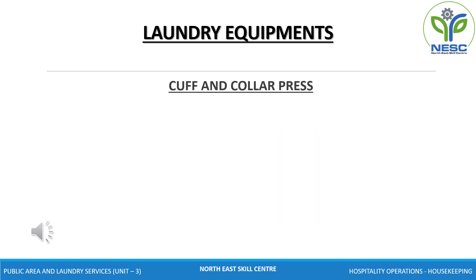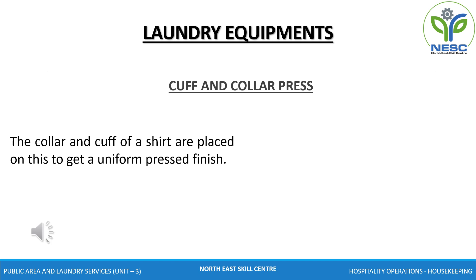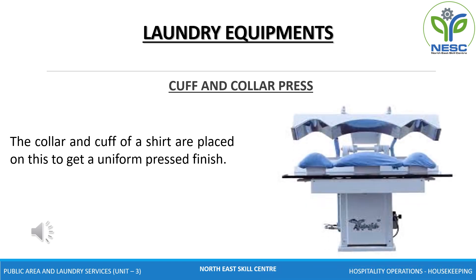Cuff and collar press. This press consists of a spring-loaded box. The collar and cuff of a shirt are placed on this to get a uniform pressed finish. Basically, the cuff and collar press is used to iron cuffs and collars of shirts.